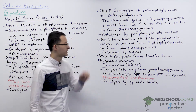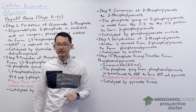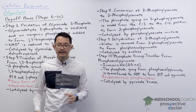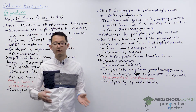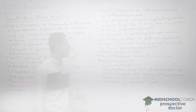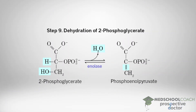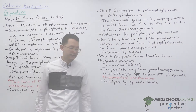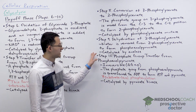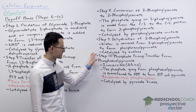In step nine we have the dehydration of 2-phosphoglycerate. Dehydration means the removal of water. You can see in this diagram how water is removed from 2-phosphoglycerate to form phosphoenolpyruvate, and this reaction is catalyzed by the enzyme enolase.